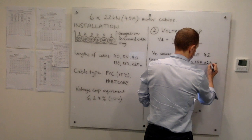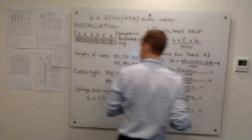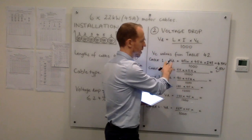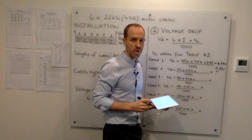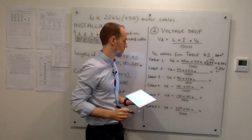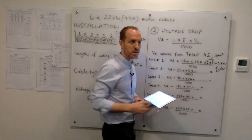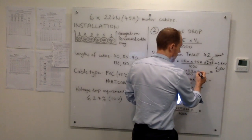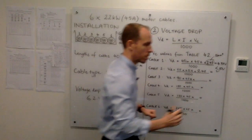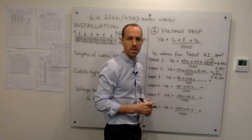For cable 1 at 40 metres: 40 times 45 times 2.43 divided by 1,000 gives a voltage drop of 4.37 volts, which is less than 10 volts. So a 16mm² cable is fine for cable 1. Moving on to cable 2 at 55 metres — using a VC value of 2.43, the voltage drop is 6.01 volts, again less than 10 volts. So 16mm² is fine for cable 2.